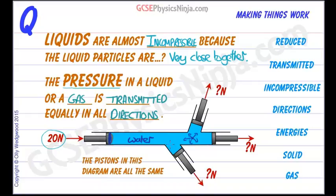And so if we have some branches off this hydraulic system, and if these pistons all have the same area as well, then we'll find that the forces on these pistons will be the same as the original force. So these will be 20 newtons, 20 newtons, and 20 newtons.